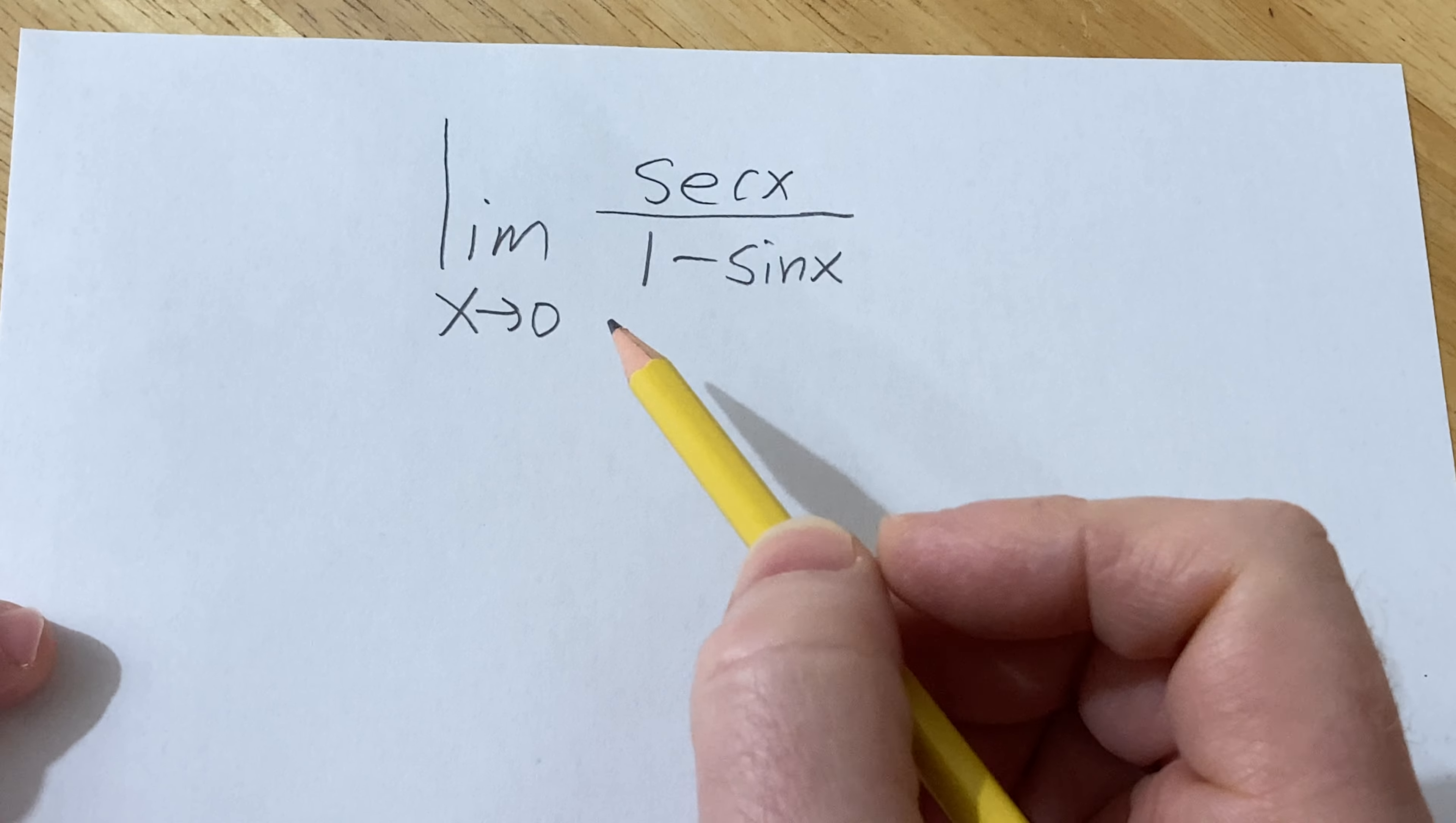So if we do that, we get the secant of zero over one minus the sine of zero. Now you might not be familiar with the values of secant, but you probably are familiar with the values of cosine, and recall secant is one over cosine.